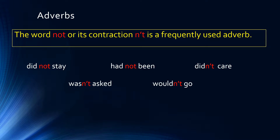The word 'not,' or its contraction 'n't,' is a frequently used adverb but is oftentimes not recognized as one. For example: 'did not stay,' 'had not been,' 'didn't care,' 'wasn't asked,' 'wouldn't go' — 'not' and 'n't' are adverbs. In 'did not stay,' 'not' is placed right between the two parts of the verb and modifies the verb 'did stay.'